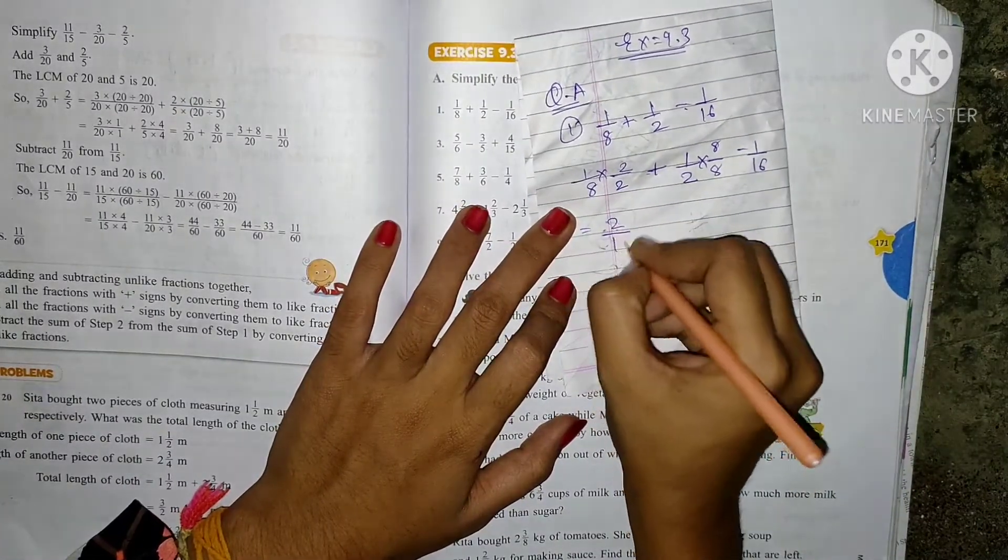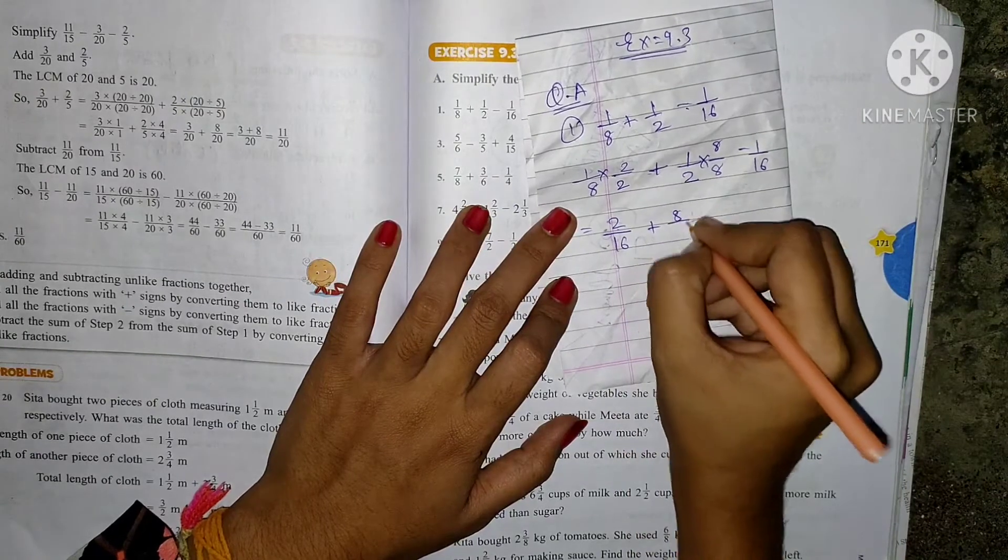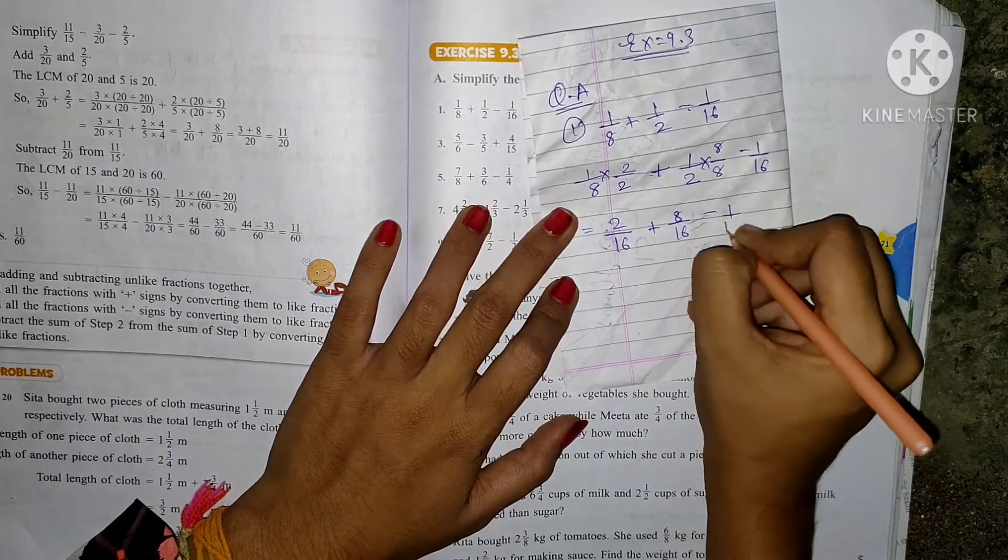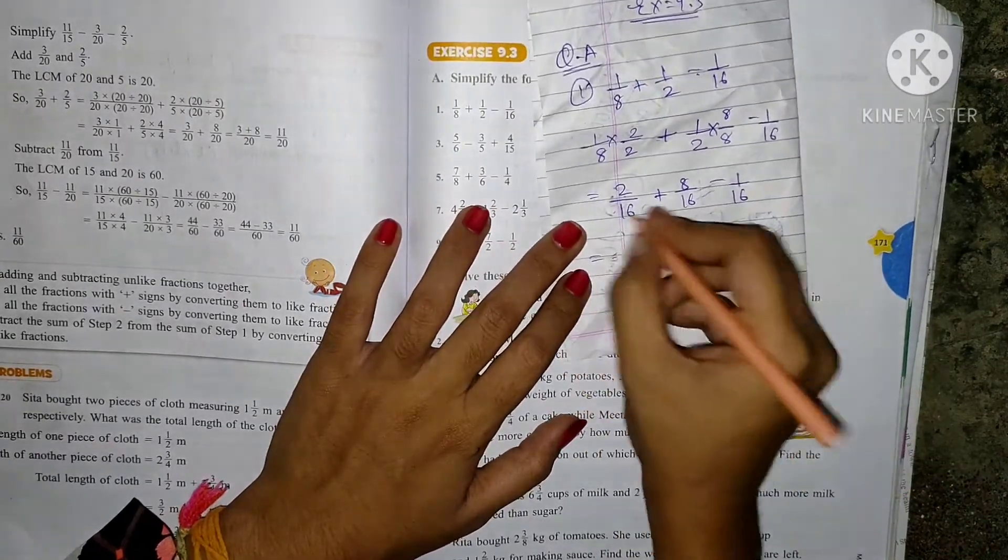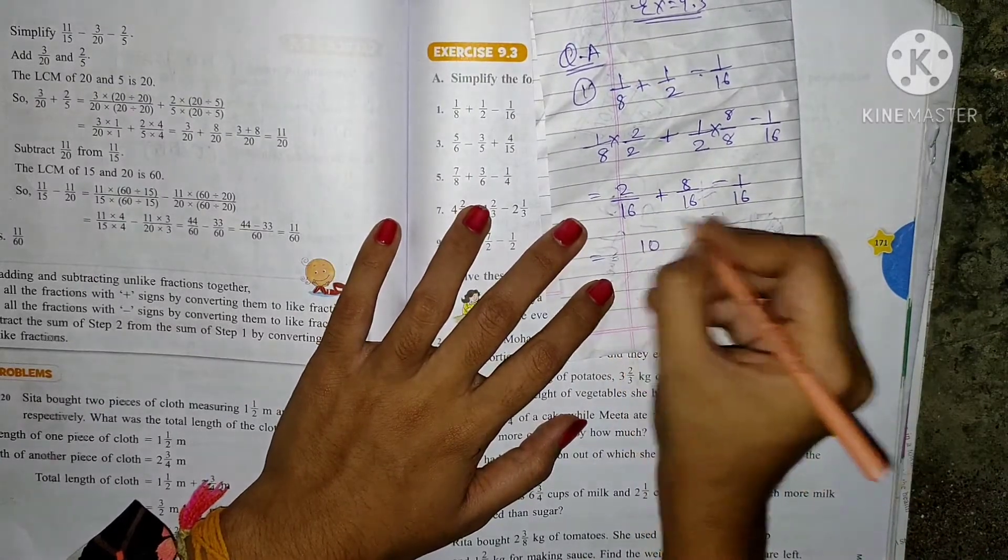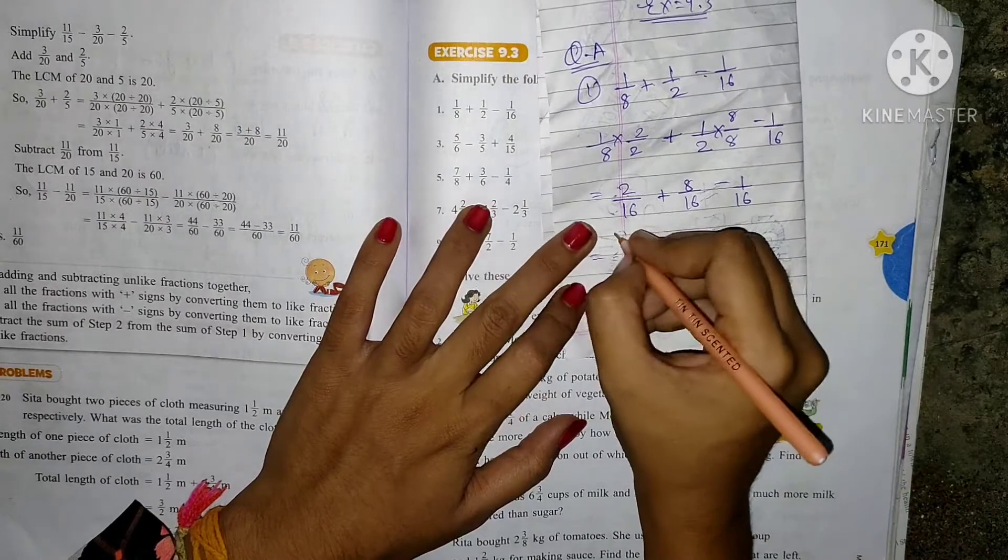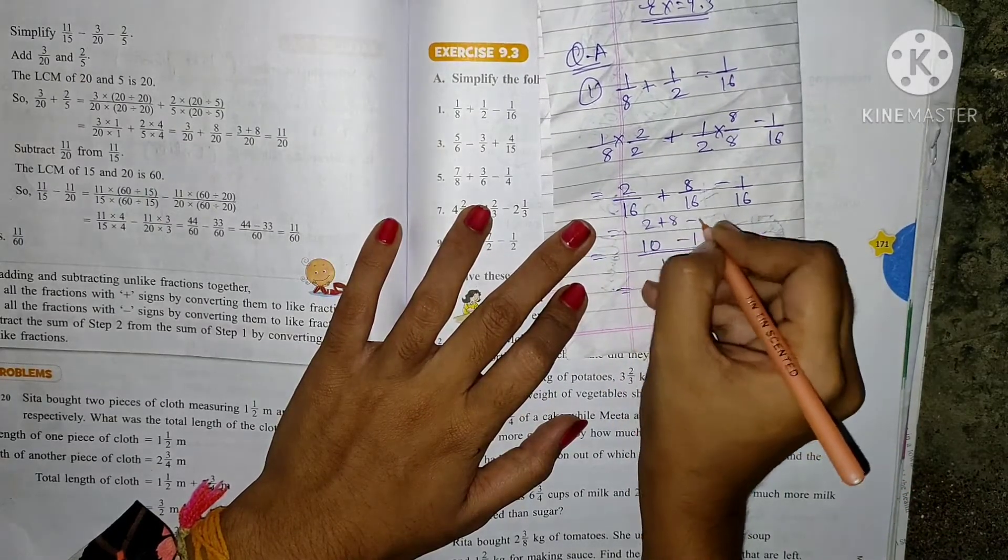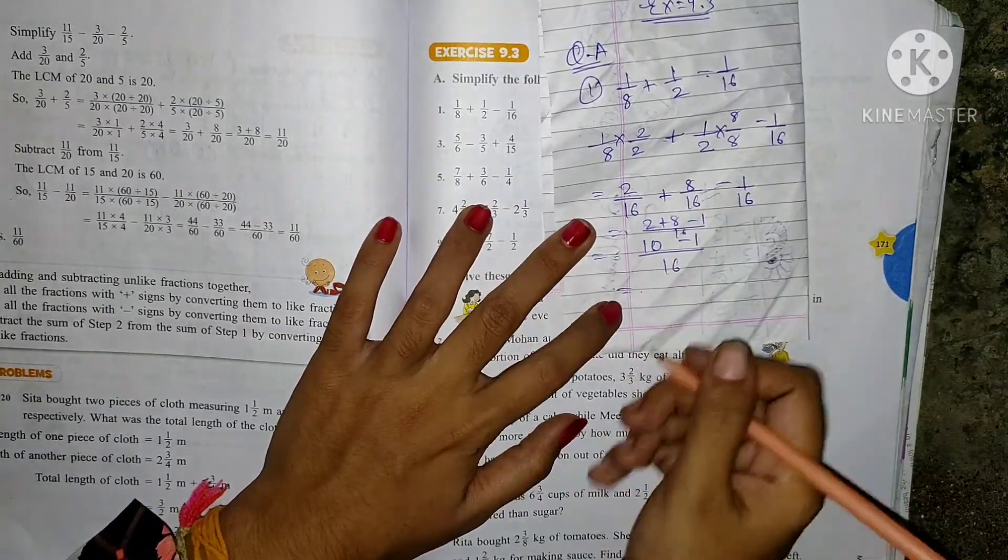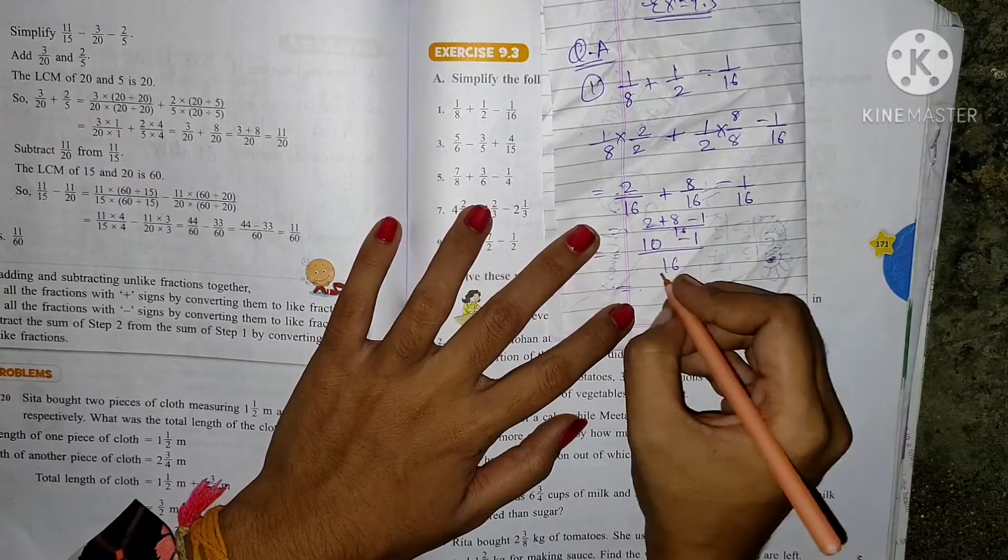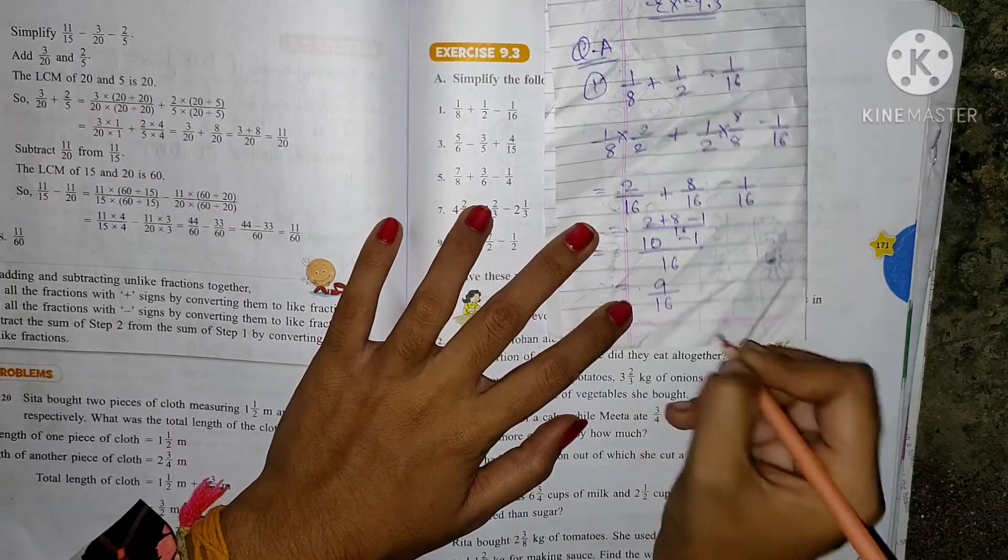Now, 2 by 16 plus 8 by 16 minus 1 by 16. 2 plus 8, 10. 10 minus 1 by 16. Okay? See, 2 plus 8 minus 1 by 16, just like that. So 10 minus 1 by 16. It is your 9 by 16.